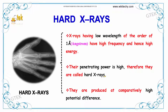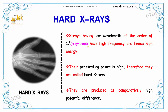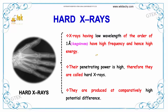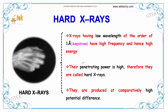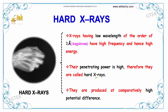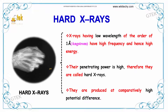Now we will talk about hard X-rays. X-rays having low wavelength of the order of 1 angstrom, with high frequency and hence high energy — their penetrating power is really high, therefore they are called hard X-rays. They are produced at comparatively high potential difference.